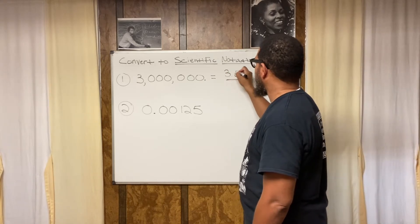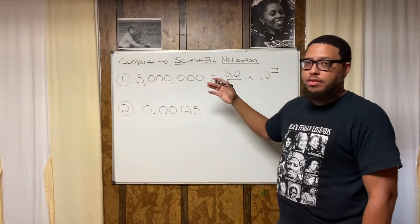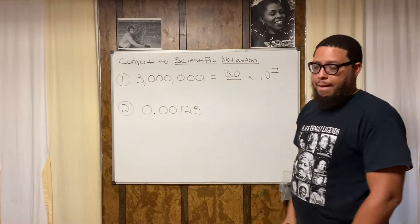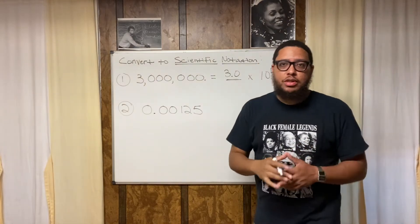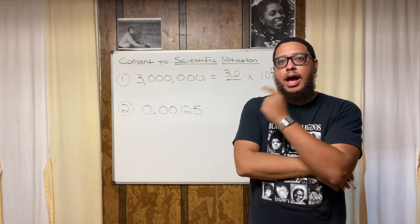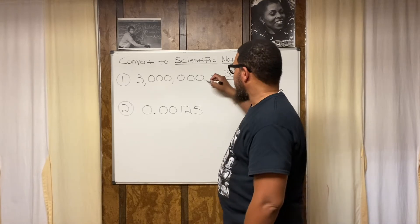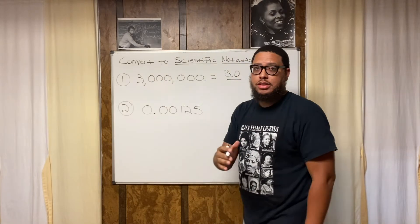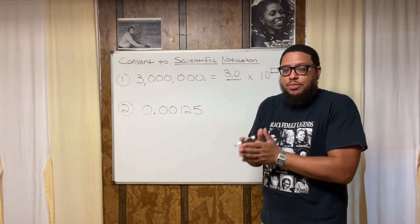So I'm going to write 3.0 — I like to put a zero after the decimal point. That's my factor. Now the second thing I got to figure out is what is my exponent going to be. The way you know the exponent is this: how many spaces did I move my decimal point? I moved it — it started at the end of the number and I went to the left one, two, three, four, five, six. I went six spaces.